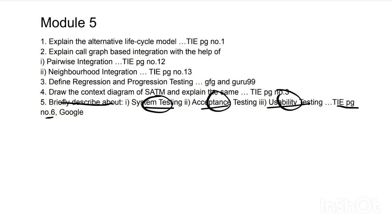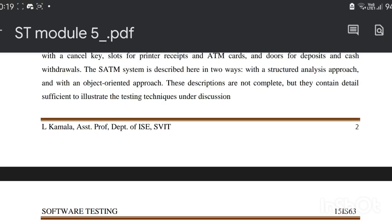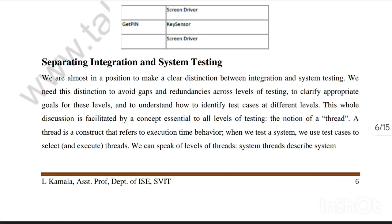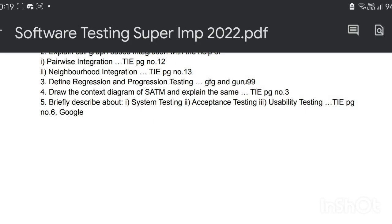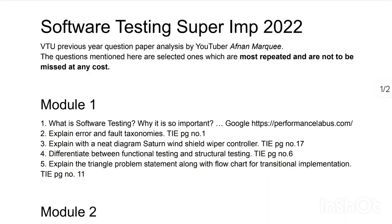Acceptance testing and usability testing need to be found from Google. At page number 6, you can find relevant information on system testing. That's all for the subject software testing. If you have any doubts or need more help, you can message me on Instagram — my ID is in the description box. Please hit the like button and subscribe to the channel so I can make more videos like this. Thank you for watching.